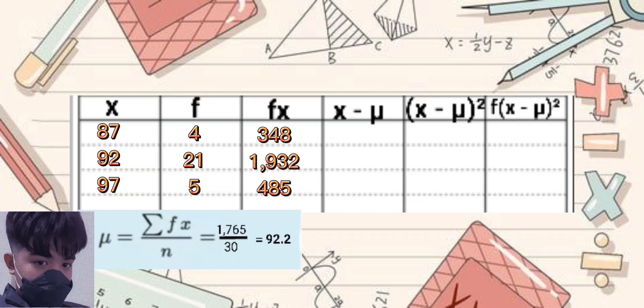Proceeding to the fourth column, we will subtract the mean to the data values. Then, in the fifth column, we will just square the results of the fourth column.